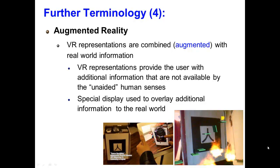Next, we'll look at augmented reality. In augmented reality, virtual reality representations are combined or augmented with real-world information — it's essentially the merging of the virtual world and the real world. Virtual reality representations provide the user with additional information not available by the unaided human senses, which implies a special display in order to overlay that additional information. Augmented reality has many applications, many of which focus on repairing the internal components of a living or mechanical system, and it's widely used for health education and training. For example, you can provide information about where cancerous tissue is located within a patient, or provide guidance to a surgeon on where to make an incision by overlaying it on the patient's body.